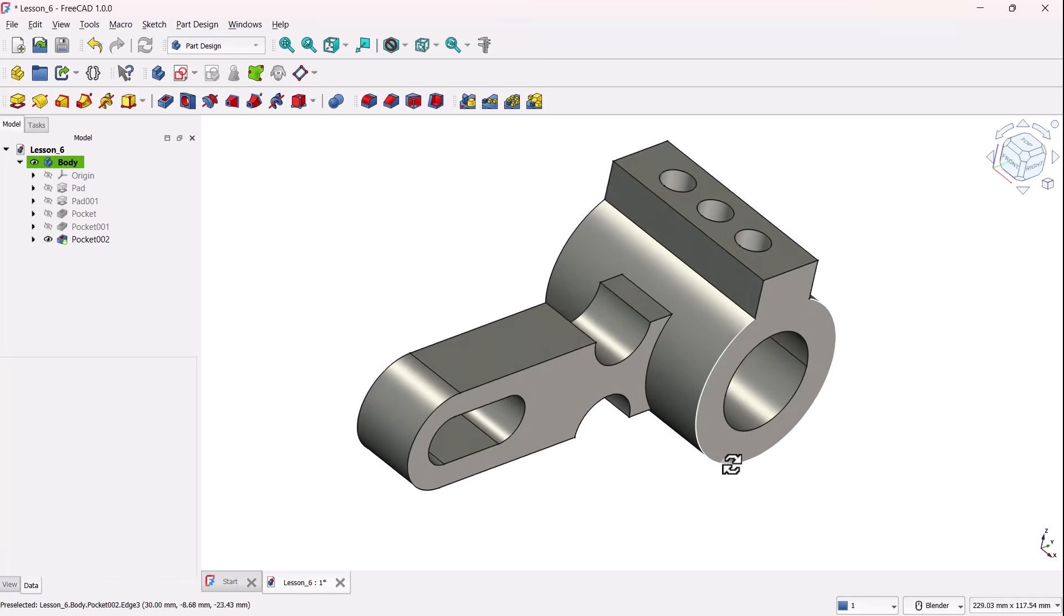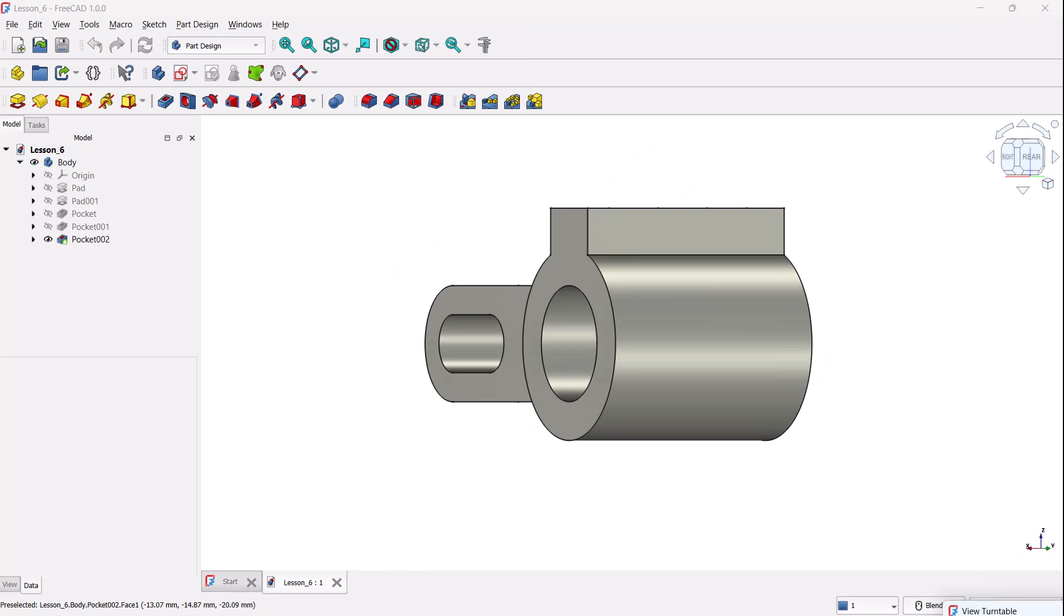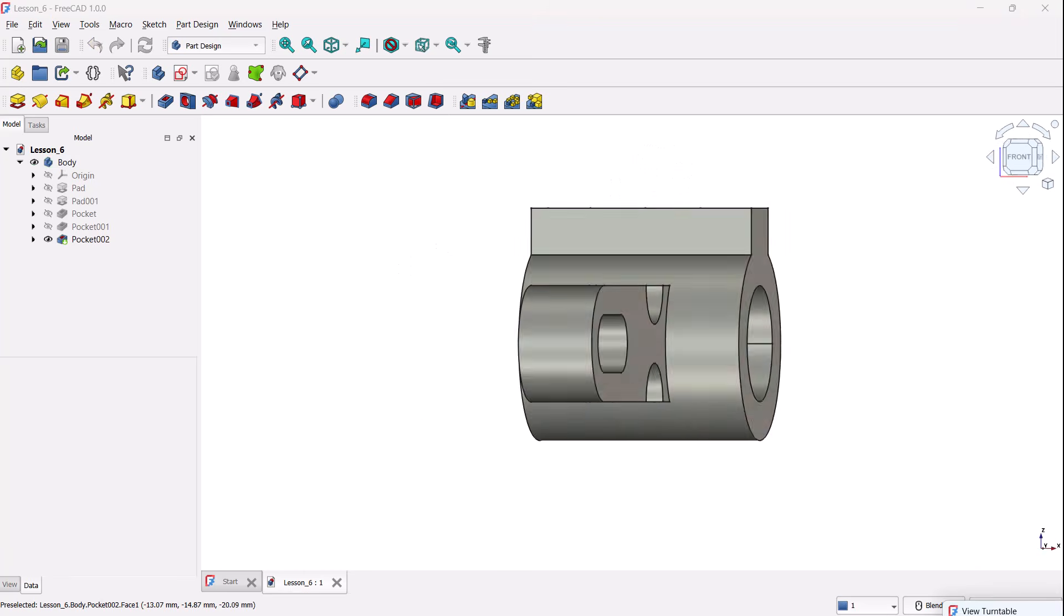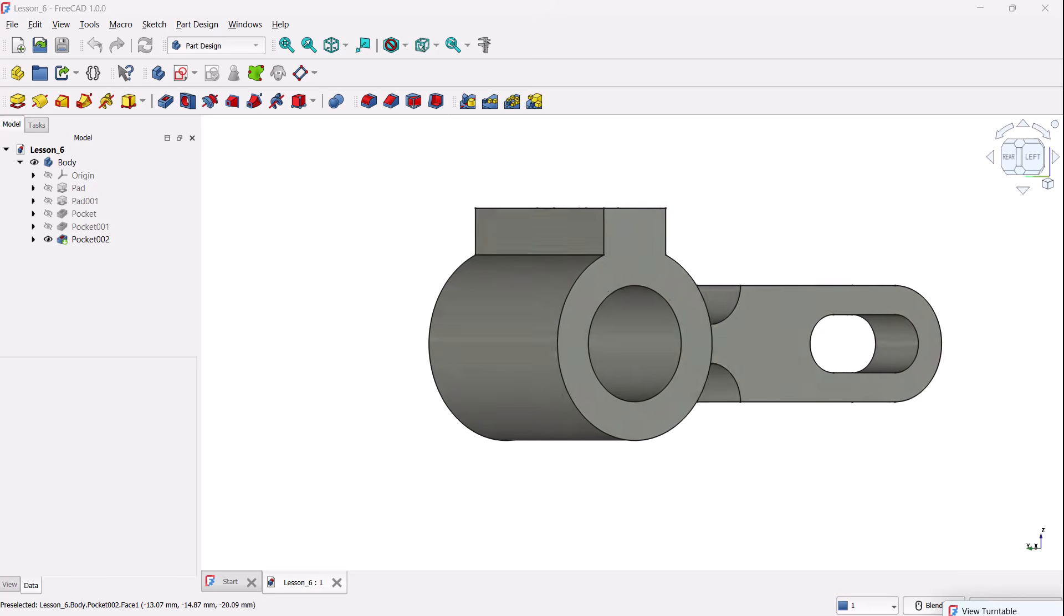And there we go. The 3D model is complete. It matches the isometric drawing perfectly. Thanks for following along. If you found this helpful, smash that like button and subscribe for more tutorials.